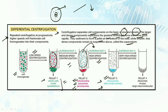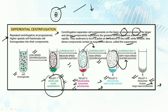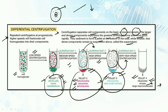The process continues: we take the supernatant and expose it to high-speed centrifugation. In the third pellet we get microsomes and small vesicles. In the final step, the supernatant is again taken and exposed to very high-speed centrifugation, yielding the final pellet containing ribosomes, viruses, and large macromolecules. Make sure you remember which organelles are removed at which step. Questions have been framed from this area many times, so make some mnemonics to help you remember.